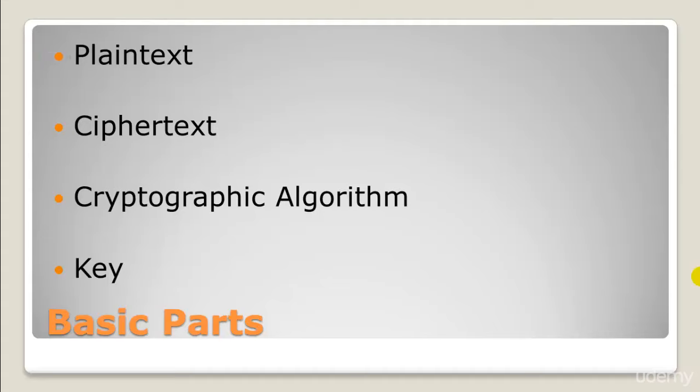The second part is ciphertext. Ciphertext represents plaintext rendered unintelligible by the application of a mathematical algorithm. Ciphertext is the encrypted plaintext that is transmitted to the receiver.